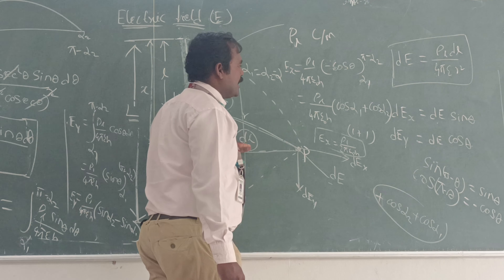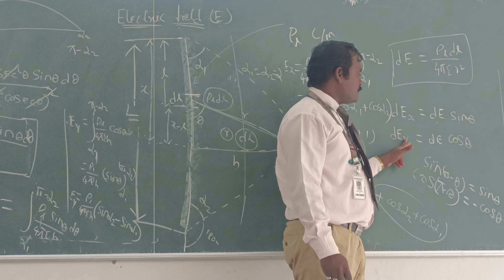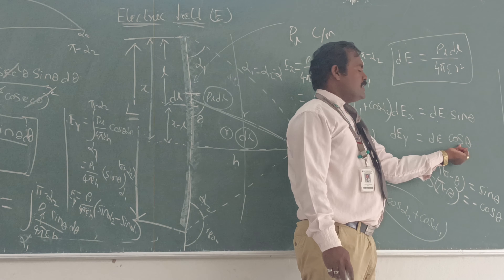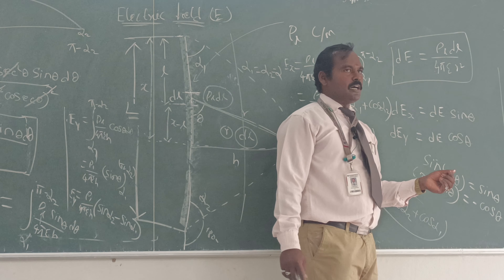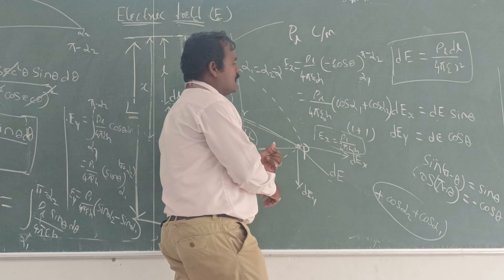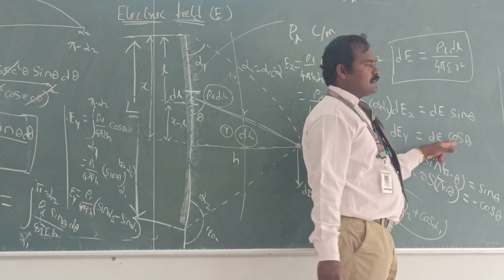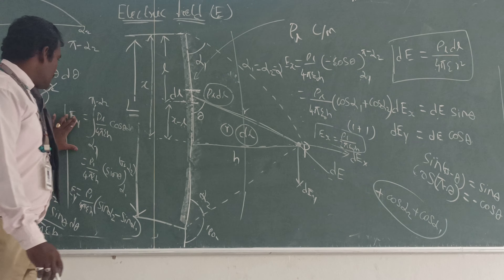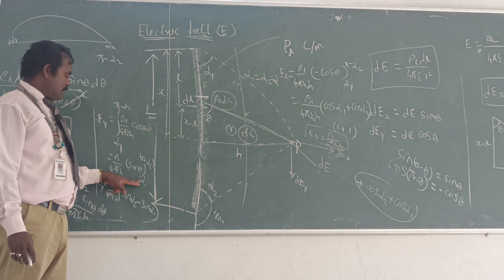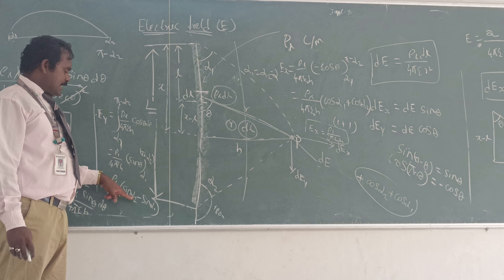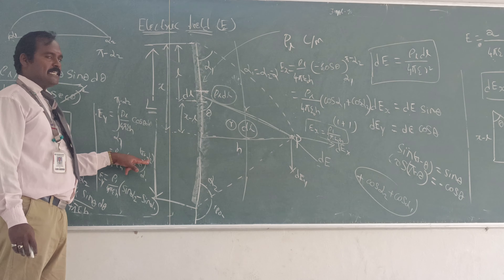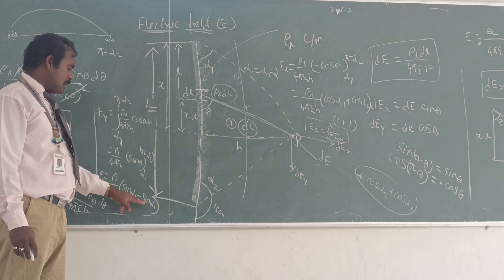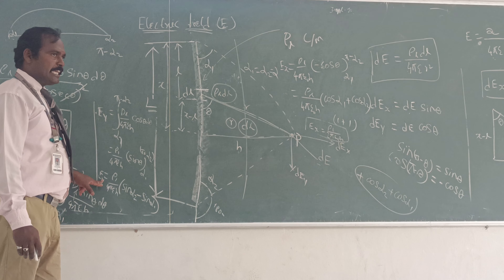Similarly, dEy equals dE cos theta, which has the same form as dEx but with cos theta instead of sin theta. When integrating cos theta, we get sin theta. Substituting the limits alpha 1 to pi minus alpha 2, and using sin(pi minus alpha 2) equals sin alpha 2, we get Ey equal to rho L divided by 4 pi epsilon H, times the quantity sin alpha 2 minus sin alpha 1.